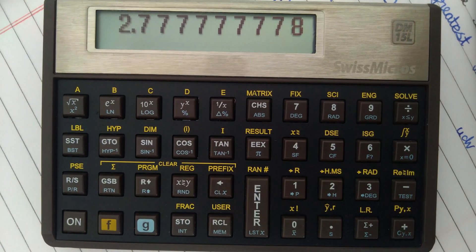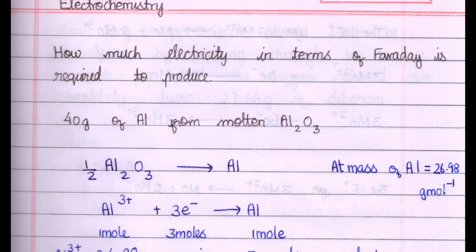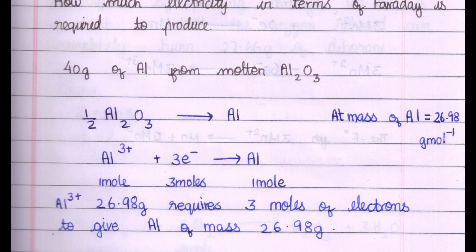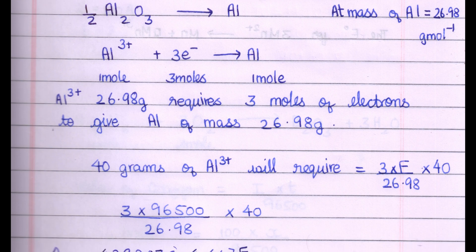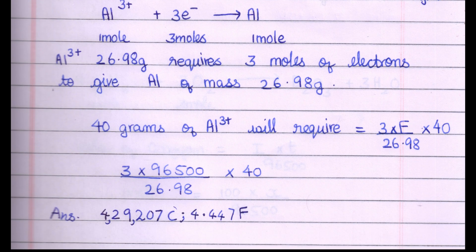I have a problem for you. It is known that 1 mol of aluminum 3+ requires 3 mol of electrons to give 1 mol of aluminum metal. The atomic mass of aluminum is 26.98 g/mol.